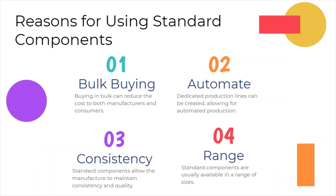Reasons for using standard components: some types of components are used in many different products. These include fasteners and fixings to hold materials together, electrical components and mechanical parts. There are companies that have production lines dedicated to just making these standard components, meaning they can buy materials in bulk, getting lower prices.